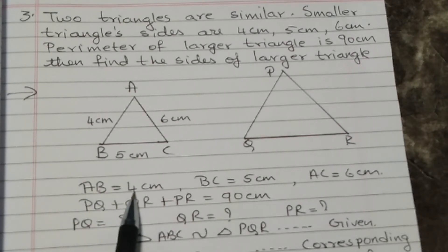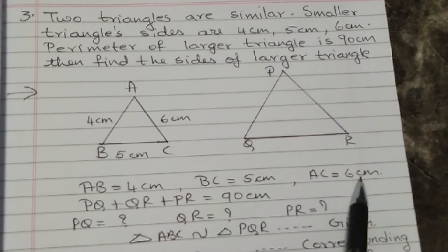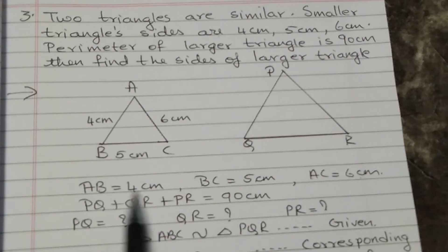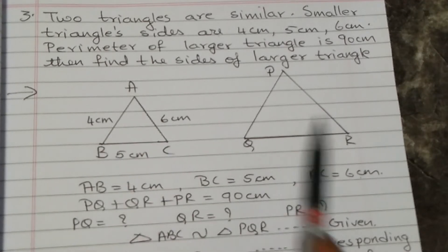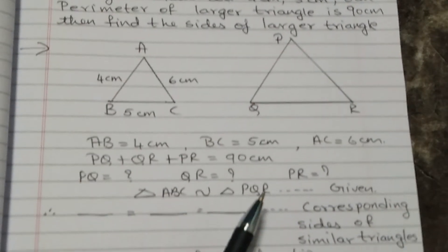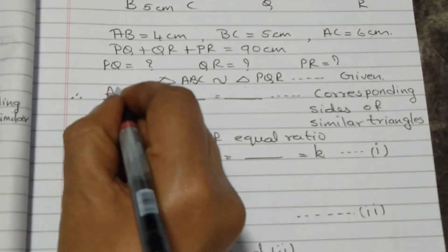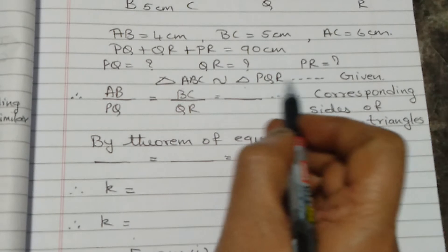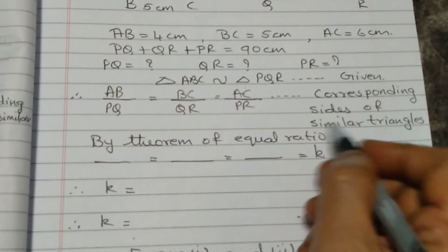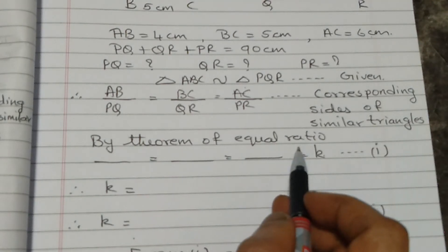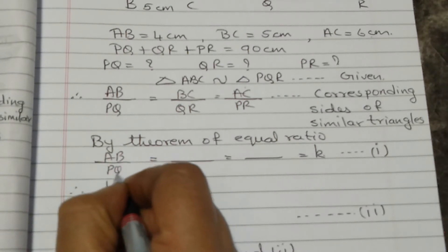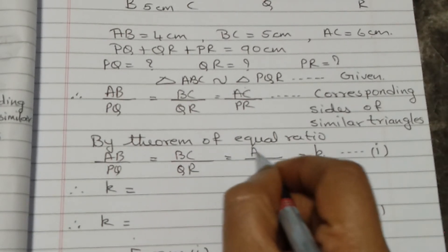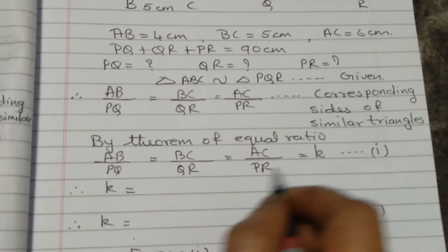Since triangle ABC is similar to triangle PQR, the corresponding sides are proportional: AB/PQ = BC/QR = AC/PR. By the theorem of equal ratio, this common ratio equals k.